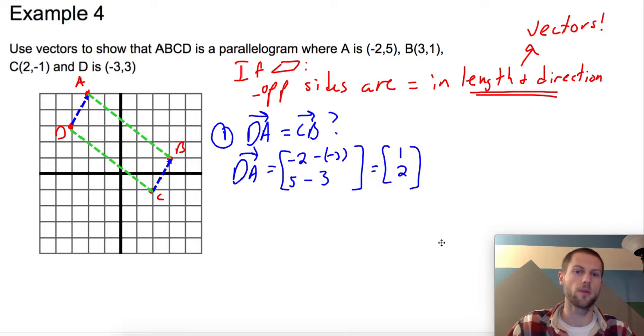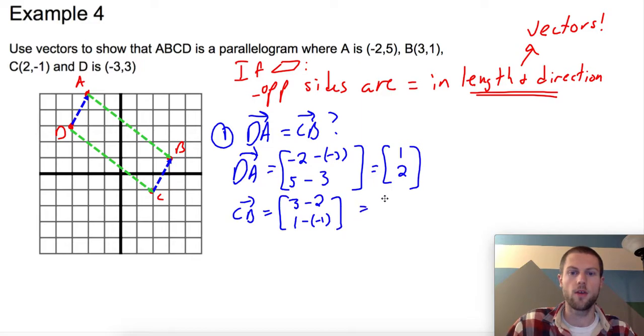And for CB, vector CB, that's going to equal, let's just start with B. B is 3 minus C is 2. B is 1 minus -1. And hey, what do you know? It's the same thing, (1, 2). So check, these two are parallel.